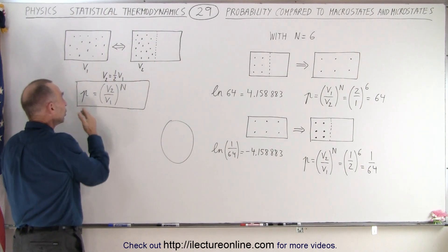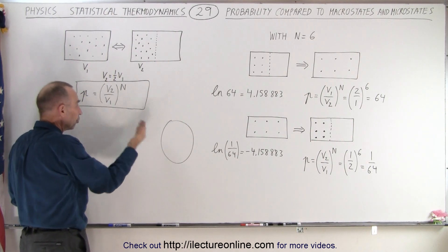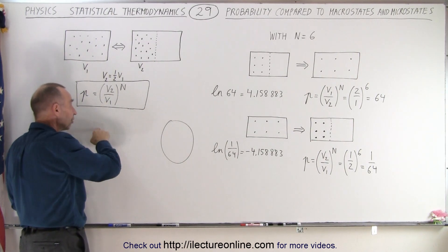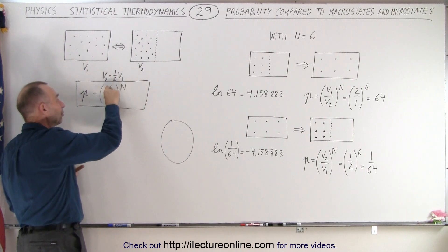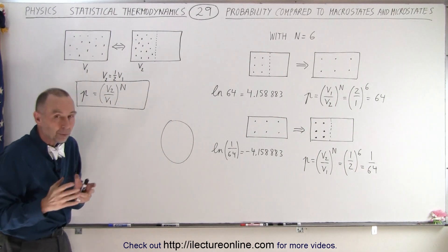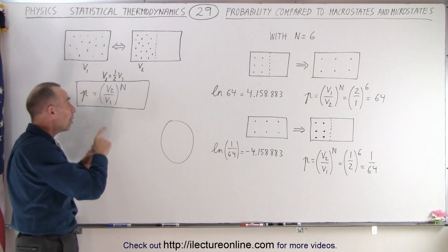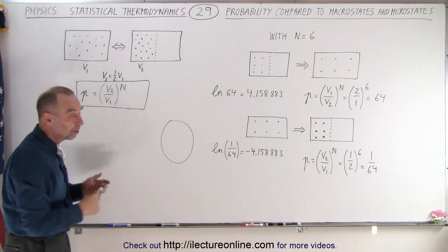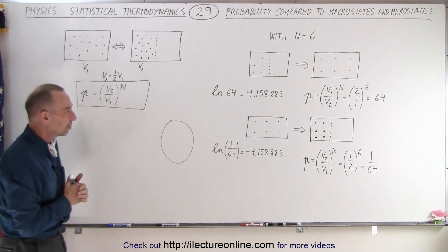So again, the probability that we go from a smaller volume to a larger volume or a larger volume to a smaller volume, that is equal to the ratio of the volumes to the nth power, where n is the number of molecules involved. So in this case, we're going to be dealing with n equals six, six molecules.